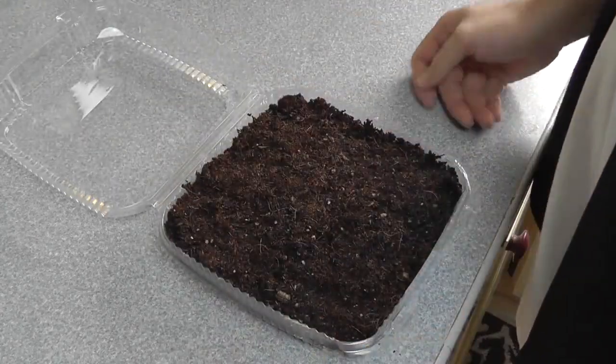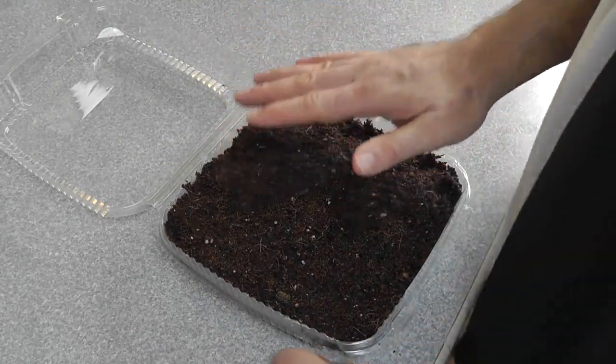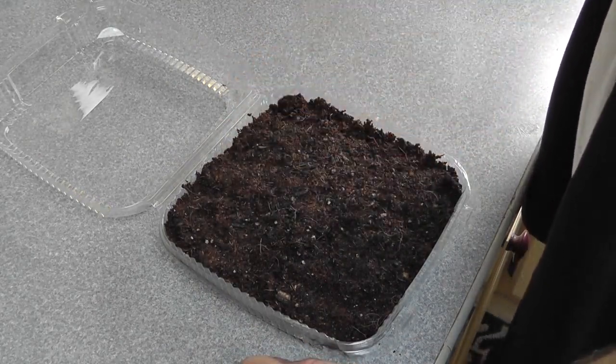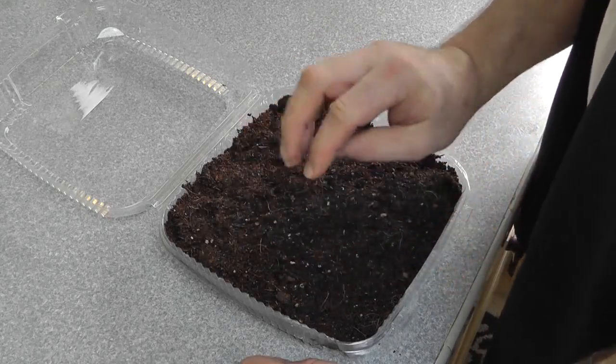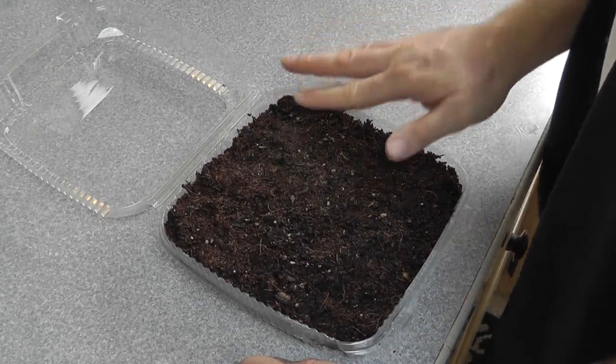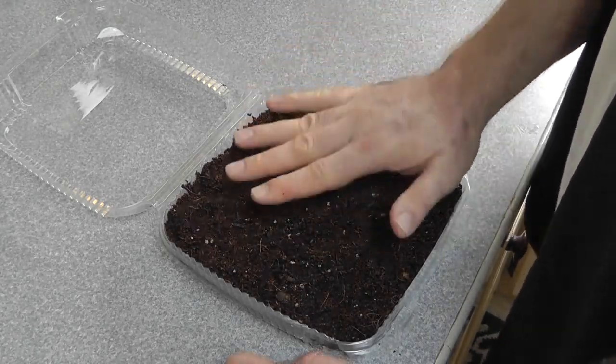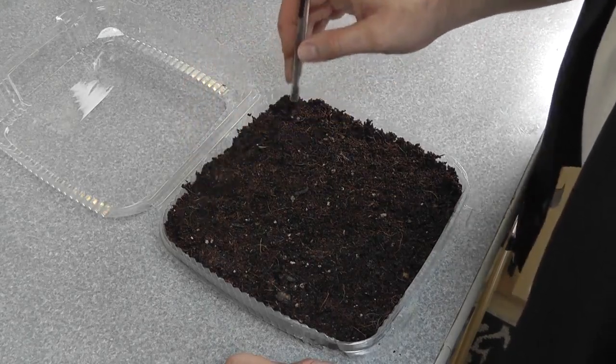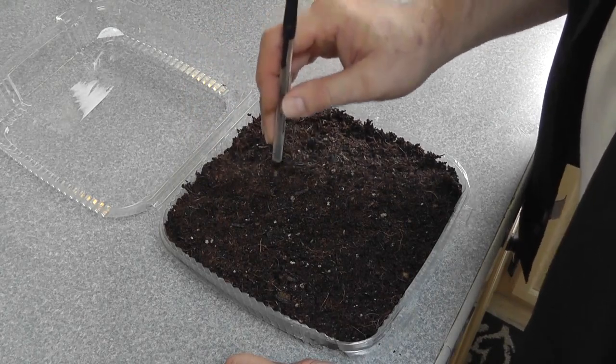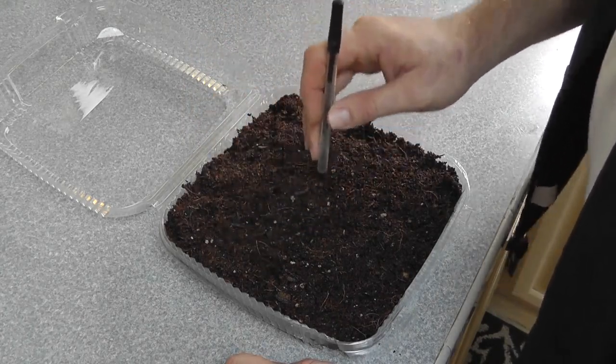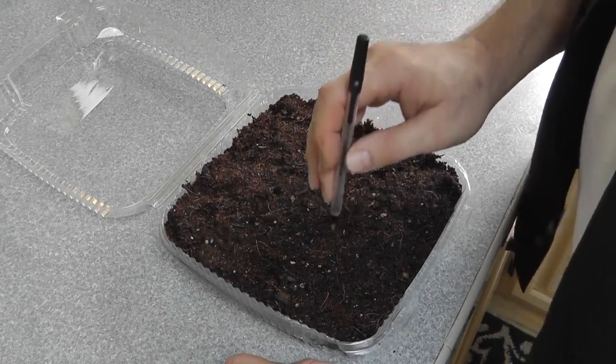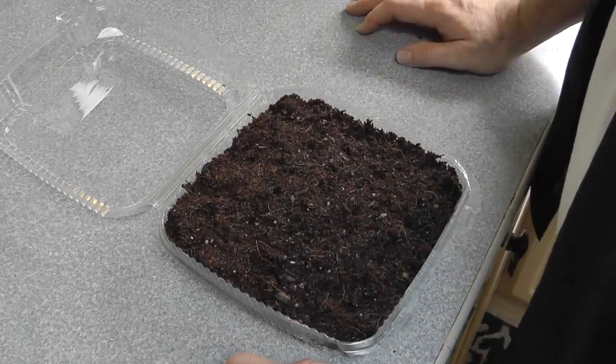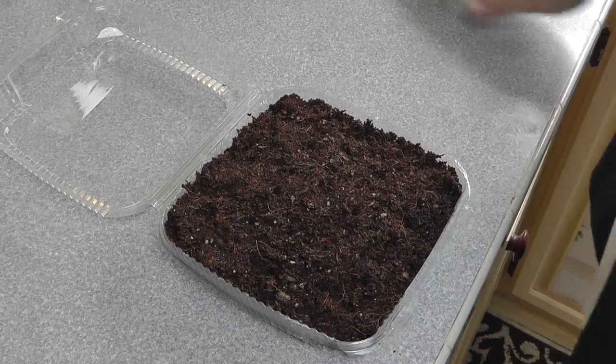My mix is one half coconut coir and the other half is organic potting soil. I pre-soaked this and I'm going to poke a few holes in here. I'm barely going to bury these seeds because they're so small.